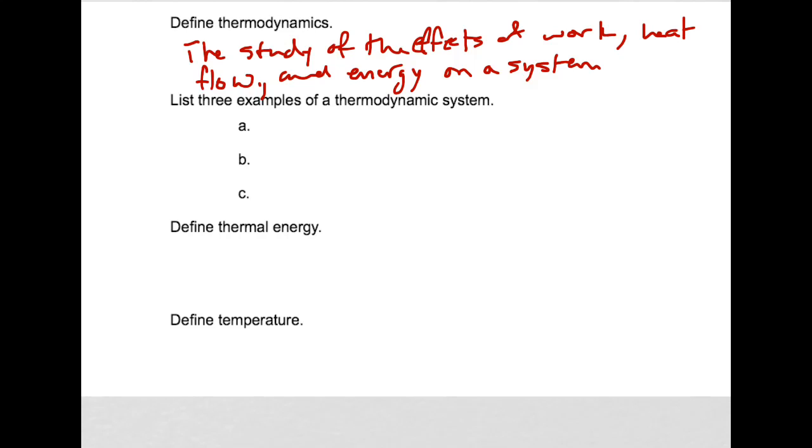Examples of a thermodynamic system are pretty simple. We could just think of it as the system and its surroundings. So like maybe ice melting in water. The system would be the ice in the water. The surroundings would be everything else. Like ice in water.